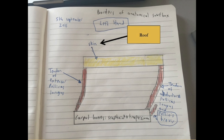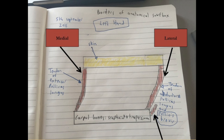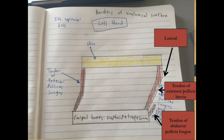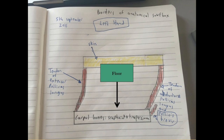The roof is mainly made by the skin, shown in yellow. The medial aspect is made by the tendon of extensor pollicis longus, while the lateral side is made by two muscles: the proximal part is the tendon of extensor pollicis brevis, and the distal part is the tendon of abductor pollicis longus. The floor mainly consists of carpal bones — the scaphoid bone and the trapezium.